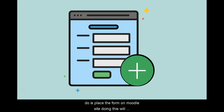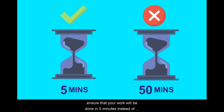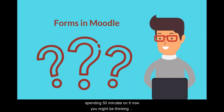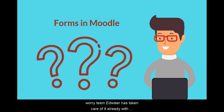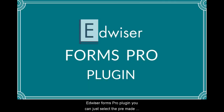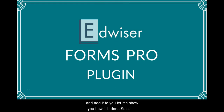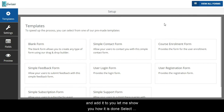A simple enrollment form can do the work. All you have to do is place the form on your Moodle site. Doing this will ensure that your work will be done in 5 minutes instead of spending 50 minutes on it. How do I create an enrollment form in Moodle? Don't need to worry — Team Advisor has taken care of it already. With the Advisor Forms Pro plugin, you can just select the pre-made enrollment form template, edit it as you like, and add it to your Moodle site.